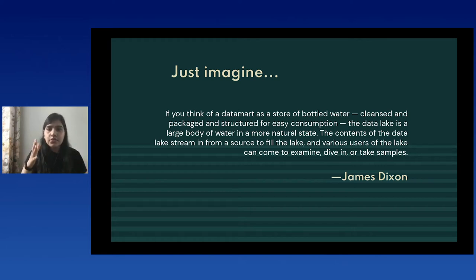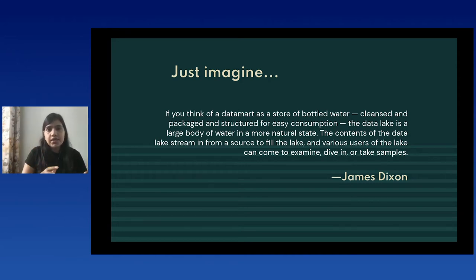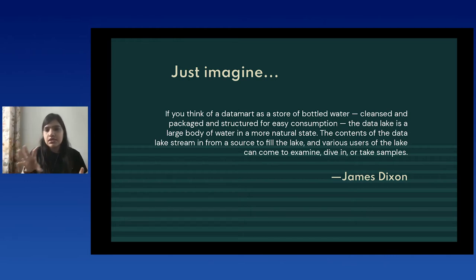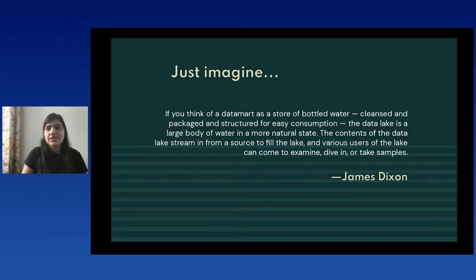That lake is in a natural state, and the same applies to the data lake. In the data lake, data would be stored in a very raw state. If someone wants to consume that data, they can further process it to get the value out of it. This correlation example was given by James Dixon, and I particularly like it — whenever I have to explain someone what a data lake is, I use this example.